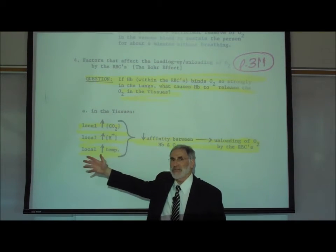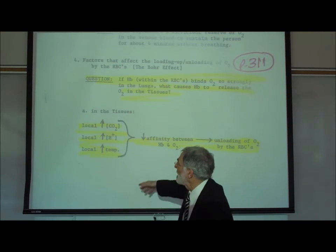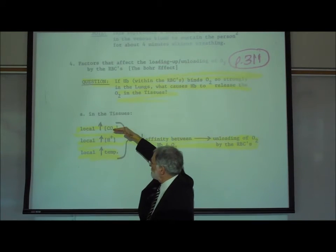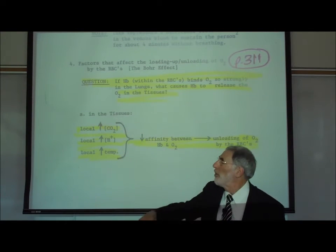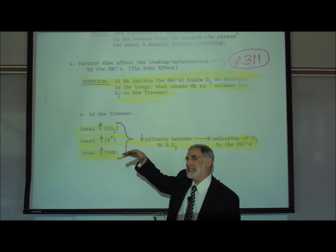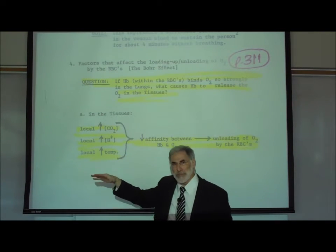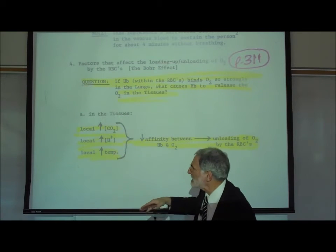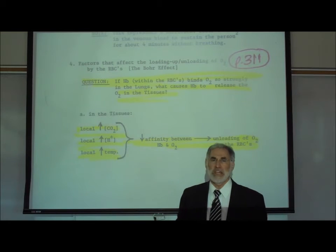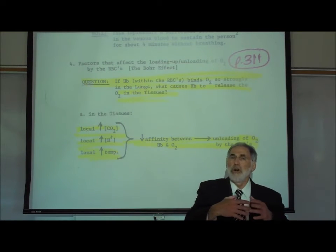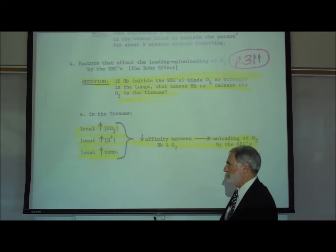We've indicated three of these factors, though there are others as well. Any time there is a local increase in carbon dioxide level, or a local increase in acidity (hydrogen ion level), or an increase in temperature, these three factors will cause changes in the molecular conformation of the hemoglobin, causing it to let go or unload that oxygen and make it available to the tissues.